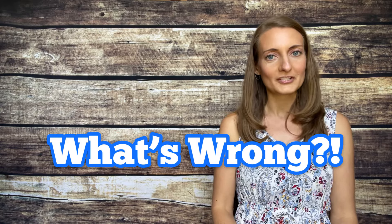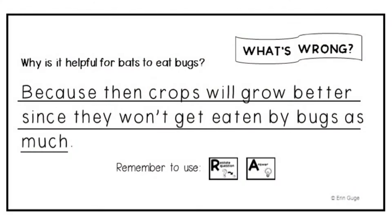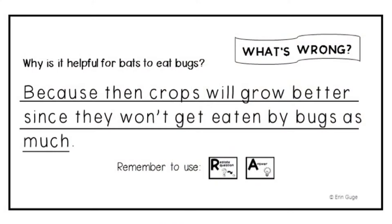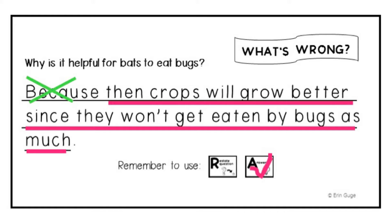And now it's time for What's Wrong? It is the same story and question. Let's see if you can figure out what is wrong with this. Let's read the question and answer. Why is it helpful for bats to eat bugs? Because then crops will grow better since they won't get eaten by bugs as much. Well, that's why it's helpful for bats to eat bugs, right? But what's wrong? Whisper what you think is wrong. Now whisper yes or no — did it restate the question? No, it did not. But we will remember to restate the question, won't we? Whisper yes or no — does this have a correct answer? Yes, it does. So let's put a pink check to show we have the answer, but a green X to show it didn't restate the question.